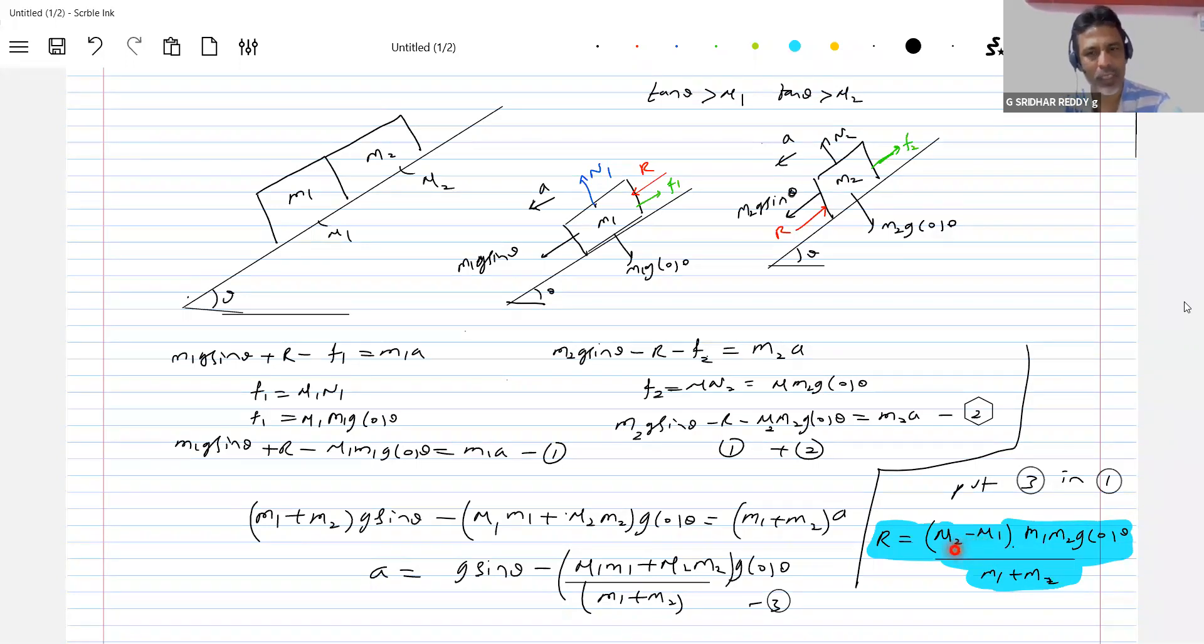This equation we have to interpret properly here. If mu2 equal to mu1, then r will be 0. If mu2 less than mu1, they will lose contact. Both will slide but lose contact. If tan theta less than mu2, block m2 will not slide, will be there only. Only the block m1 will slide.